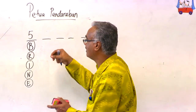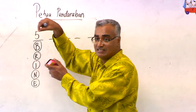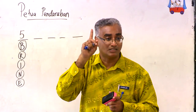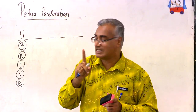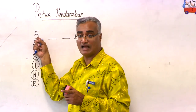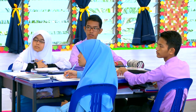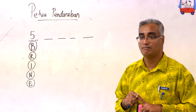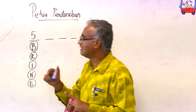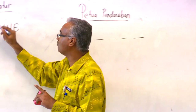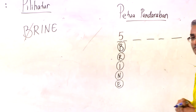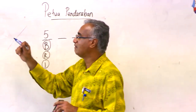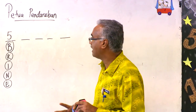Bukan kita letak 5 serentak ya — 1 petak, 1 huruf. Yang ini kita ada 5 pilihan. Katalah huruf mana kamu nak pilih dulu? B. Katalah kita dah guna huruf B di petak pertama. Jadi saya pangkah dulu. Ada lagi berapa huruf? 4. Ada 4.